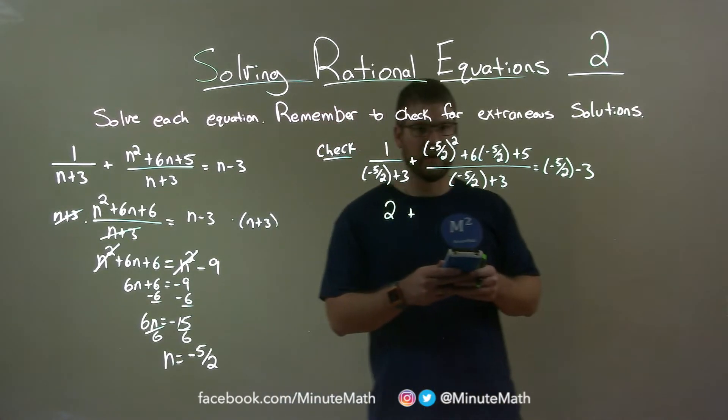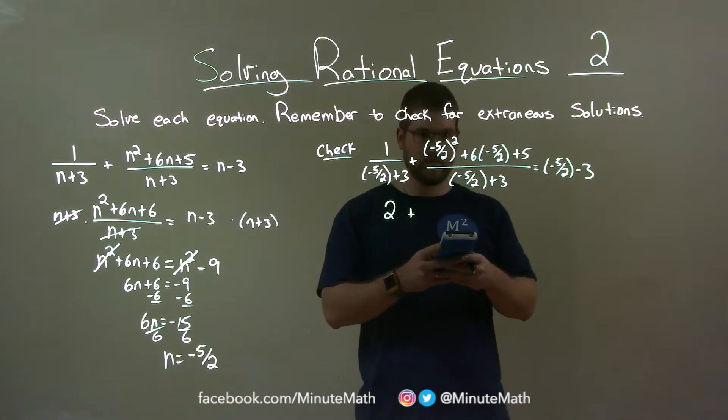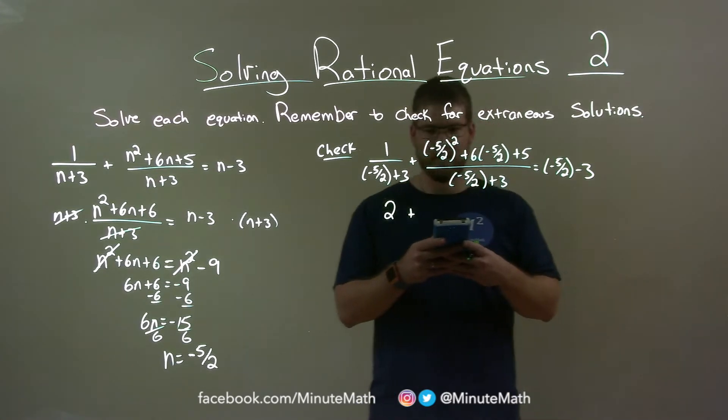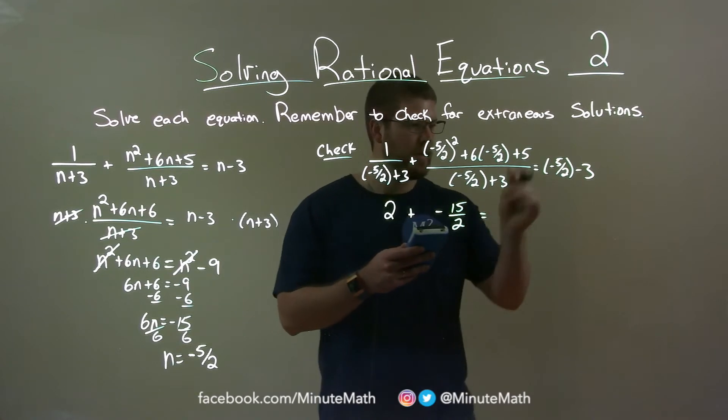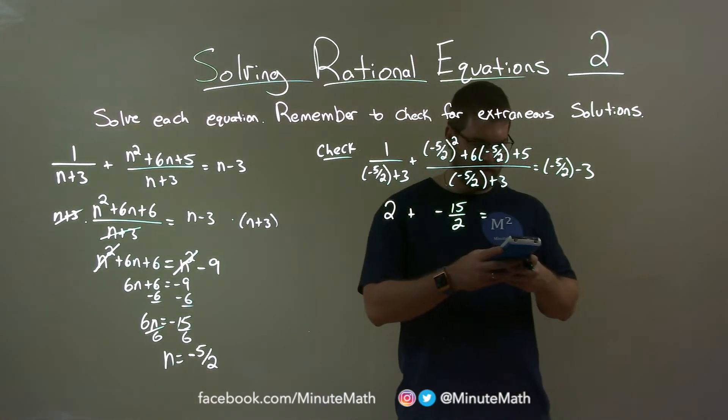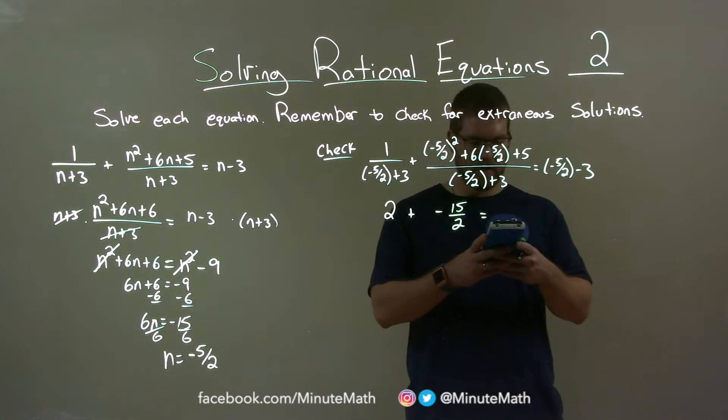Let's deal with this one here. Negative 5 halves squared, plus 6 times negative 5 halves plus 5, divided by negative 5 halves plus 3, and this as a fraction is negative 15 halves. And on the right side, negative 5 halves minus 3 equals negative 11 halves.